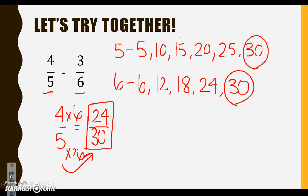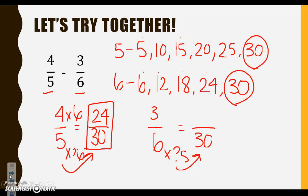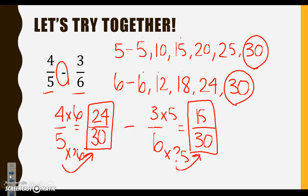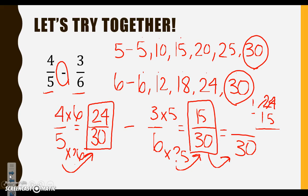Let's take a look at 3 sixths. We need to turn that into a fraction with a denominator of 30. 6 times what gives me 30? Counting our multiples: 1, 2, 3, 4, 5 — so 6 times 5 gives us 30. Since we multiplied our denominator by 5, we must multiply our numerator by the same number. When we do 3 times 5, we are left with 15. Are we finished? No — we have to go back and subtract. Remember that our denominator stays the same, so we bring that 30 over and figure out 24 minus 15 — our final answer is 9 over 30.